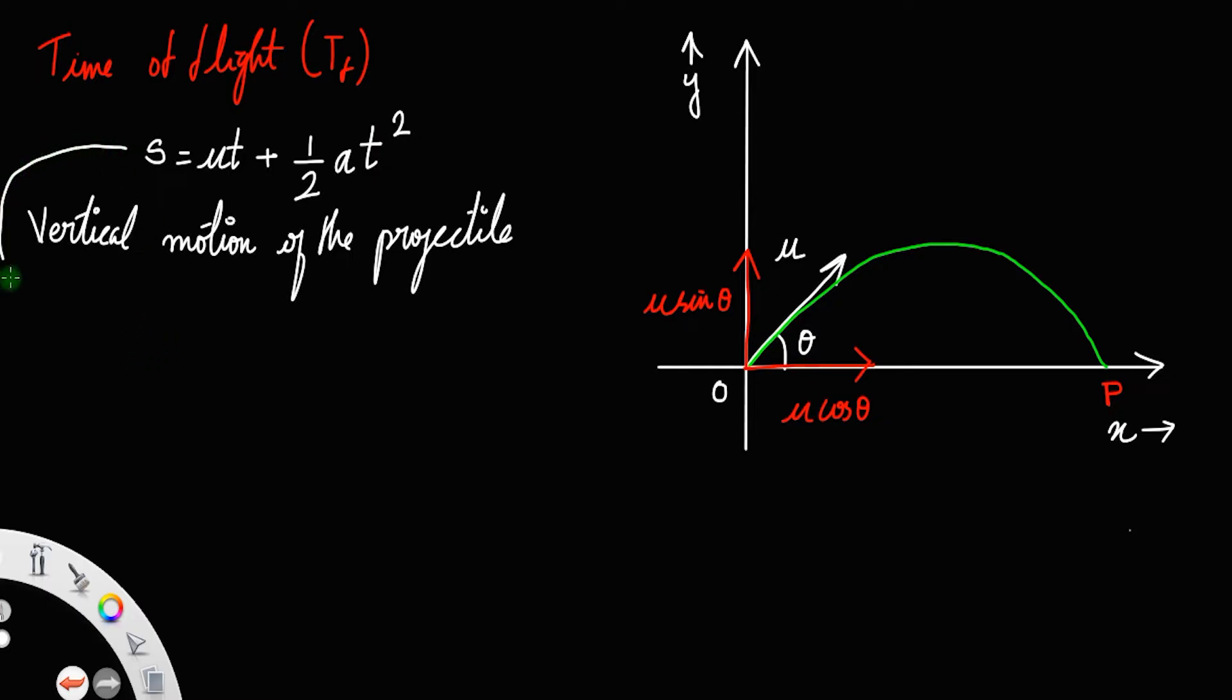When you consider the vertical motion in the vertical direction, all the parameters in here change correspondingly. Like s becomes s_y and u becomes u_y, since we are considering only the components along the vertical direction or along the y-direction.